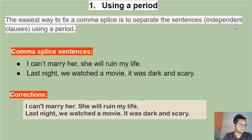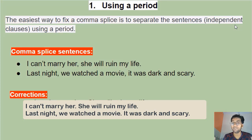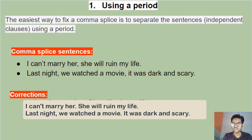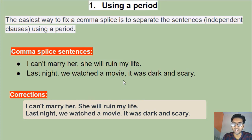Let's start with using a period — also called a full stop. This is the easiest way to fix a comma splice. All you have to do is replace the comma with a period. For example: 'I cannot marry her, she will ruin my life' becomes 'I cannot marry her. She will ruin my life.' Similarly: 'Last night we watched a movie. It was dark and scary.' Simple!